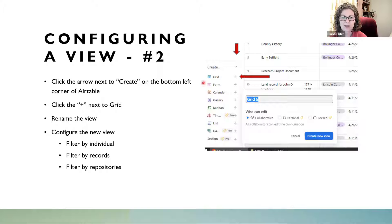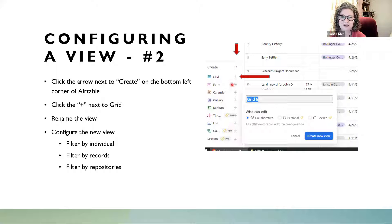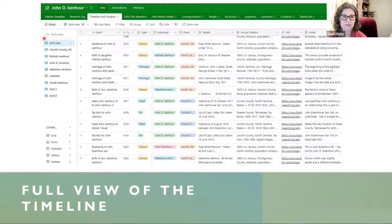You can always rename anything, including renaming grid view itself to something like 'full timeline' so you remember it's your complete view. The other way to create new views is to go to the bottom left of Airtable, scroll all the way down, and click 'Create.' You'll see all the different kinds of views: form, calendar, gallery, canvas, list, and more. Click the plus sign, it creates a brand new view, you rename it right there — by location, record, person — then click 'Create new view.'